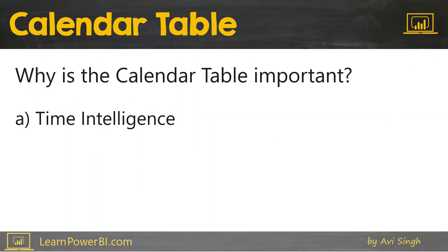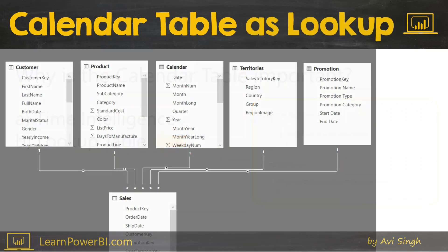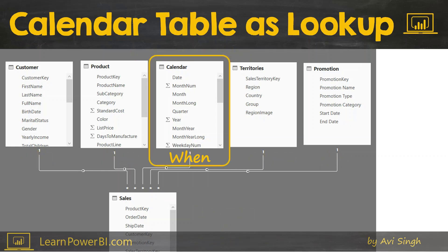Now it's time to reveal the second reason for the calendar table: it serves as a lookup table — and perhaps the most important lookup table ever. We've talked about lookup tables and data tables at multiple spots in the course, but let's do a quick recap. Data tables represent a business process; they capture information about that process — in this case, sales. Lookup tables answer the who, what, where, when, and how. So the calendar table represents the crucial "when."